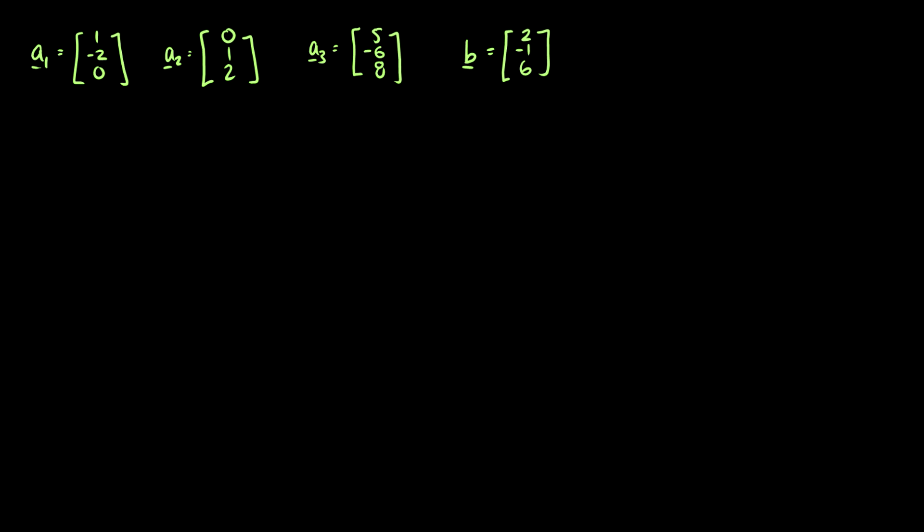So again, let's do this again. We want to find if b is a linear combination of a1, a2, and a3. So we're going to stick these all into a matrix. I'm going to use a different color. So [1,-2,0], [0,1,2], [5,-6,8]. Do these generate [2,-1,6]?